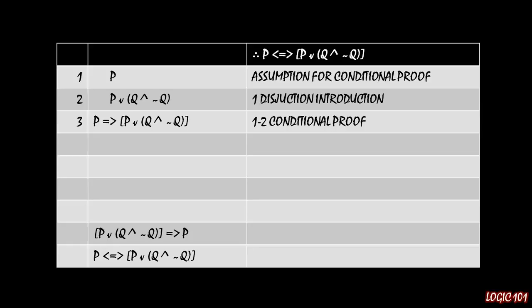The second one is going to be a little more complicated. So we have as our second conditional statement, p or q and not q implies p. We still should be using a conditional proof for this. So line four is the antecedent of that implication, p or q and not q. And this is going to be our assumption for our conditional proof.